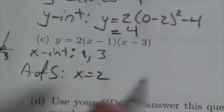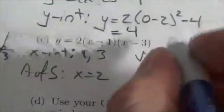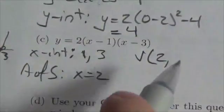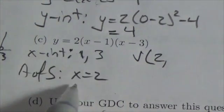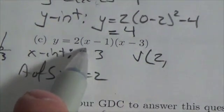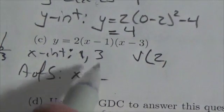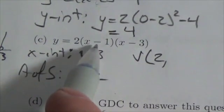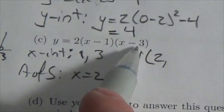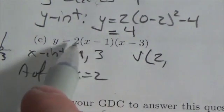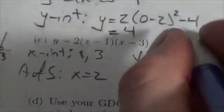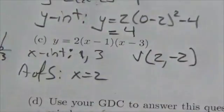Now, knowing that, I know that my vertex has got to be 2 comma something. So now let's just put that 2, x equals 2. Let's put that into the equation where x is. So 2 minus 1 is 1. 2 minus 3 will be negative 1. And so my vertex here, when I multiply 2 by 1 by negative 1, I'm going to get negative 2. So there's my vertex.